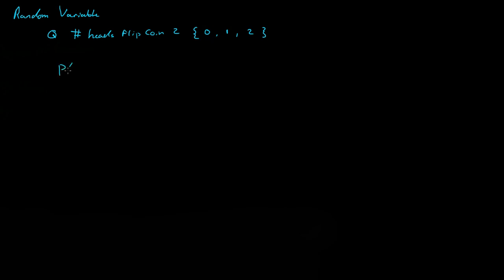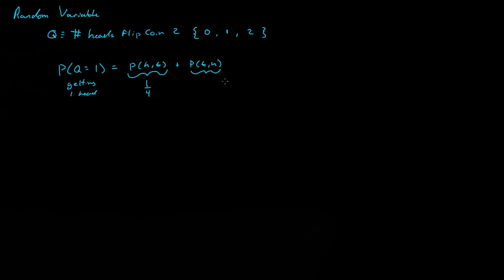Now if I asked you what's the probability that Q equals one — meaning we get exactly one head — when we flip the coin twice, the first flip could be heads then tails, or tails then heads. Each of those outcomes has probability one out of four, so the probability of getting exactly one head is two out of four, which is 0.5.